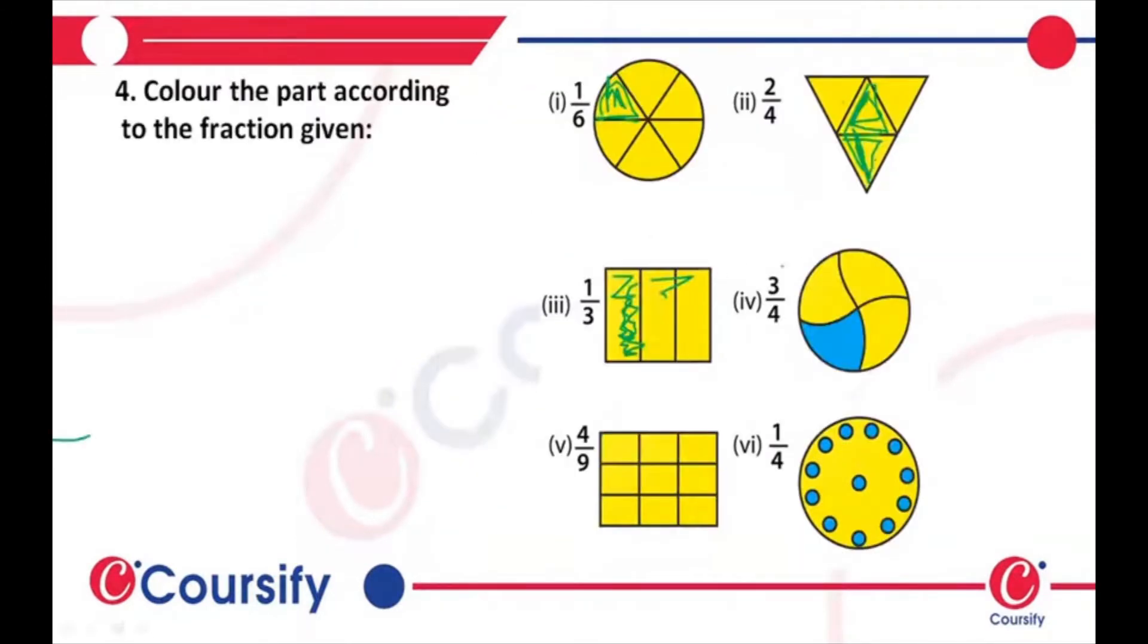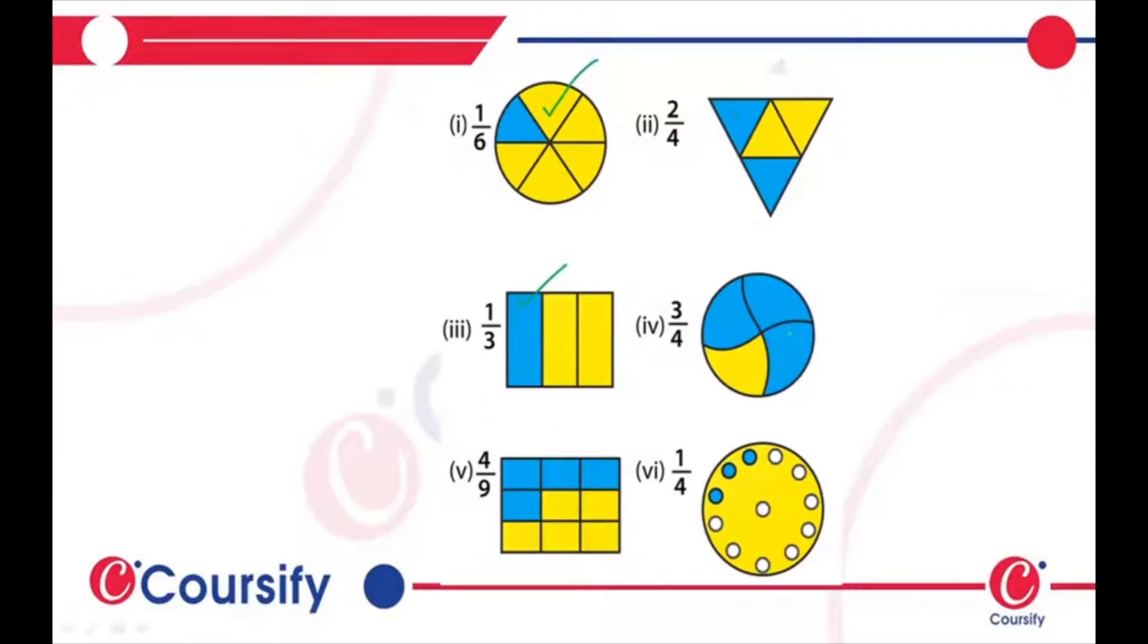Next it says 3/4. So how do you shade 3/4? This is actually 1/4, right? So in order to shade 3/4, you just need to shade 2 more. When you shade 2 more you get 1, 2, 3 out of 4. That's the answer.